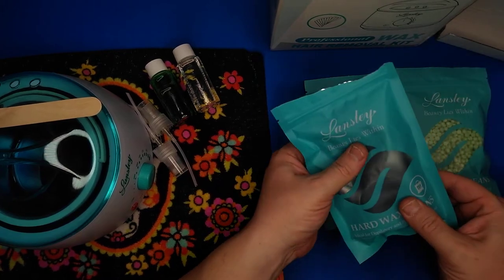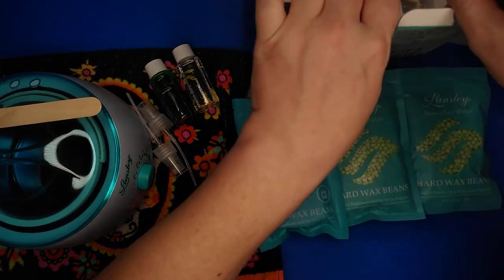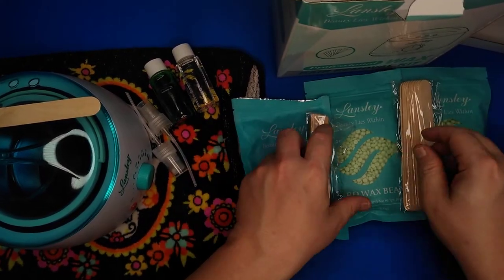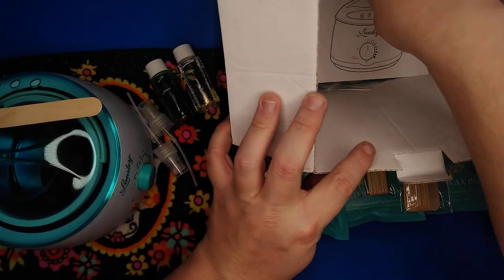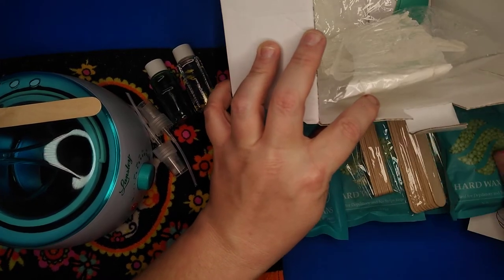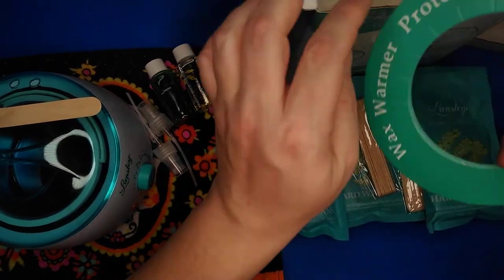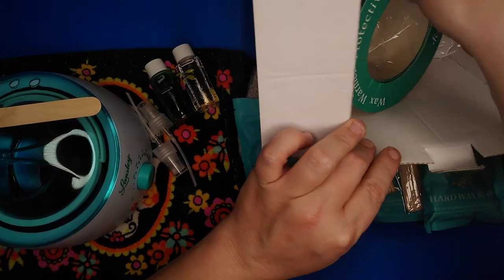Nice little hockey pucks in there and some tongue depressors or popsicle sticks or wax wipes for your instructions. More wax and gloves and the wax warmer protector collar. We don't need it at the moment.